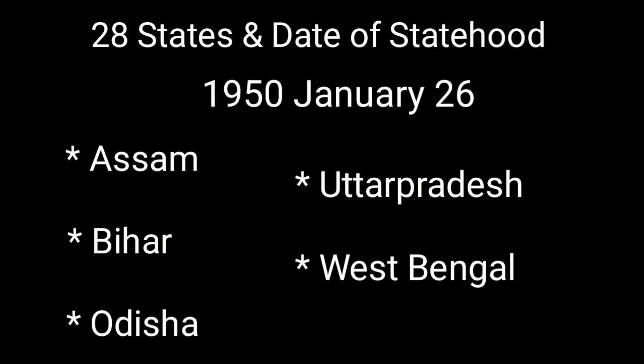Now, the 28 states of India and their dates of statehood. The states that have been in existence since January 26, 1950 include: Assam, Bihar, Odisha, Uttar Pradesh, and West Bengal — these states were already formed.